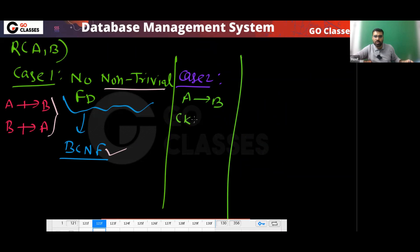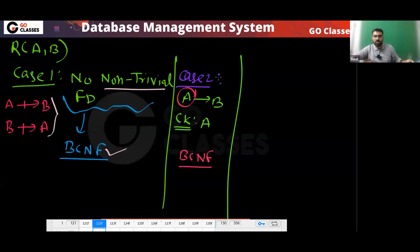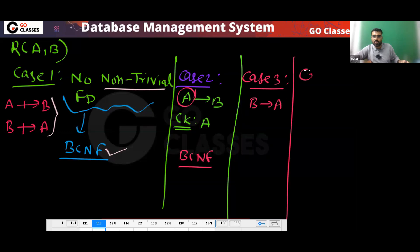In case two, where A → B, you can notice that your candidate key is A. This is your only non-trivial FD, and since A is a superkey, this relation is in BCNF. Case three is B → A. The same situation applies here: B becomes the candidate key, and the relation is in BCNF.